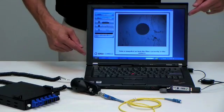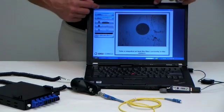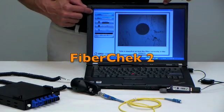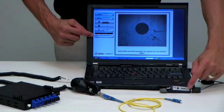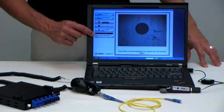The signals from both devices are read out on an application called FiberCheck2. FiberCheck2 displays the image from the video inspection probe and the power reading from the optical power meter.